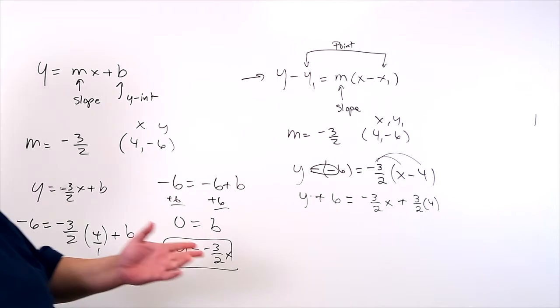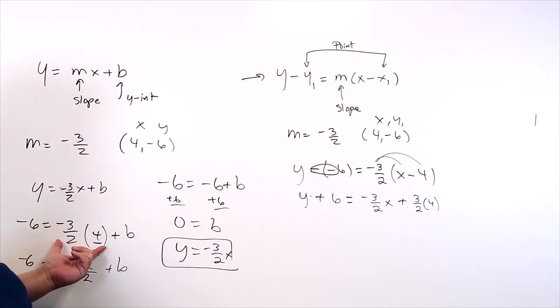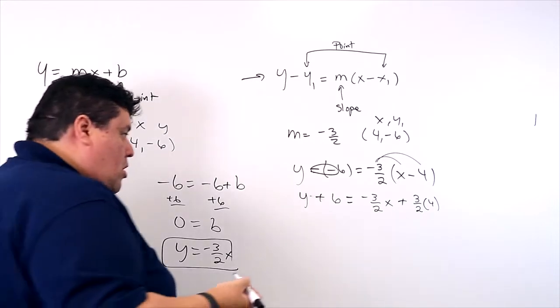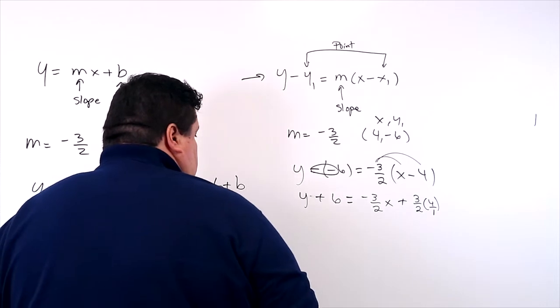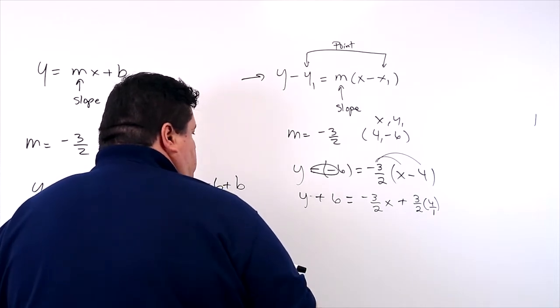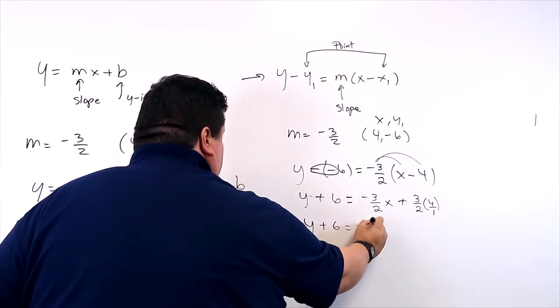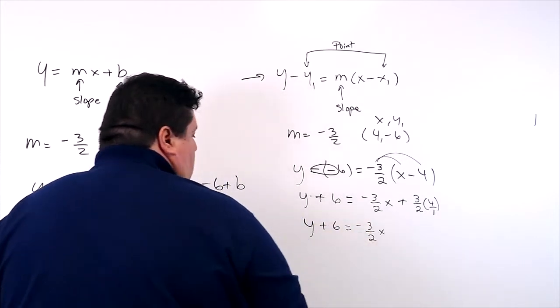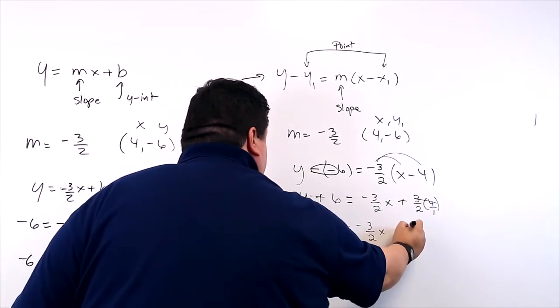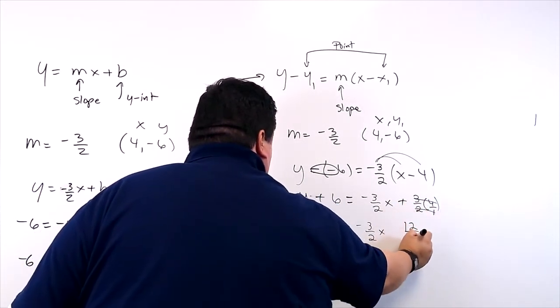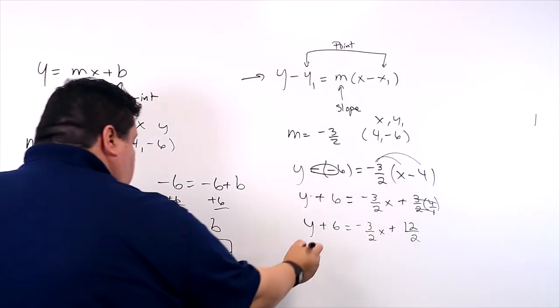Now, that looks very familiar to some of the things that we did earlier. So I'm going to put a 1 over here. Let's clean this up a little bit. Y plus 6 equals negative 3 over 2x. 3 times 4 is 12. 2 times 1 is 2. Don't forget there's a plus sign in the middle. Keep going.